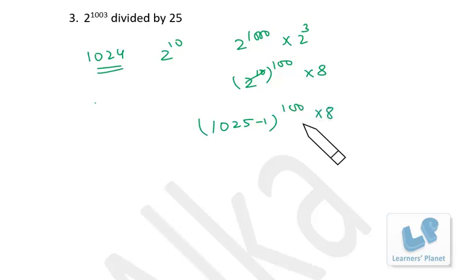Let me explain it here if you don't get confused. 1025 minus 1 raised to 100. Once you get enough practice, you don't have to write each and every step because that will be really time-consuming. The remainder will be just minus 1 raised to 100, so minus 1 raised to an even number gives remainder 1 only from this step. 1 times 8, the final remainder is 8.